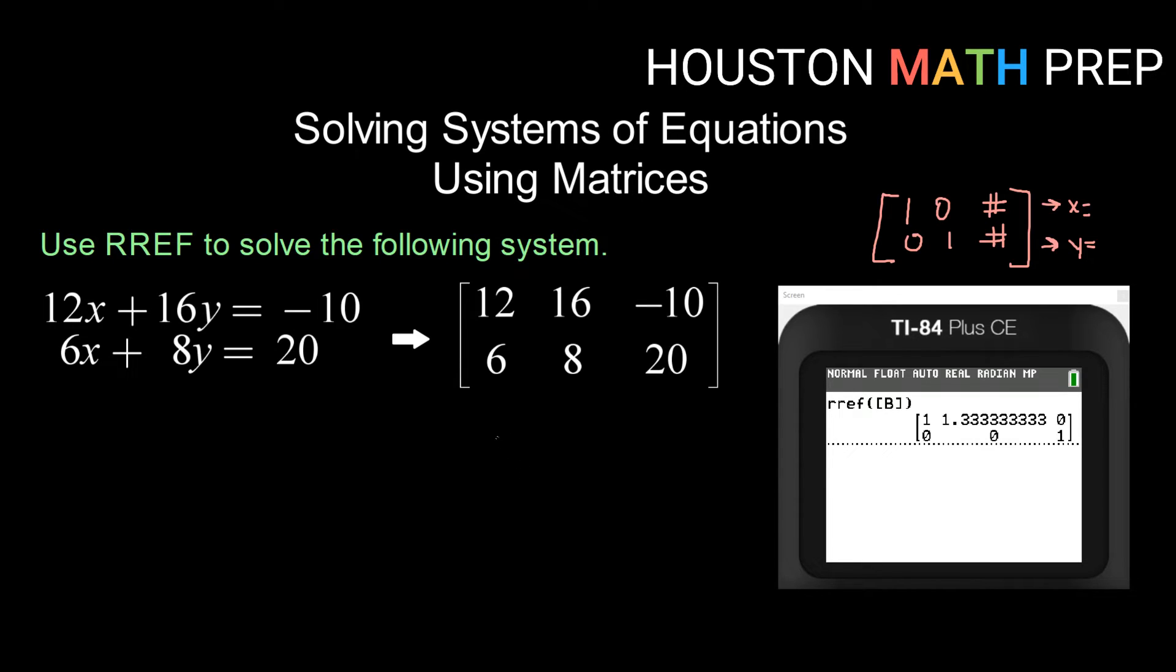So when you get something like this, it doesn't really matter what the top row looks like, but when the bottom row says zero, zero, one, that means we have an inconsistent system. Remember, inconsistent systems means we have no solutions. So again, inconsistent system. That means that our two lines, if we were to graph them, are parallel, and therefore they do not cross. They do not have an intersection point or a solution. So when we see this zero, zero, one in our second row, that means no solutions, inconsistent system.